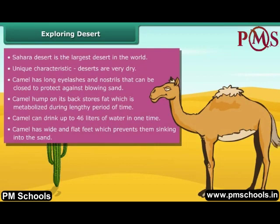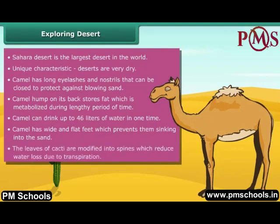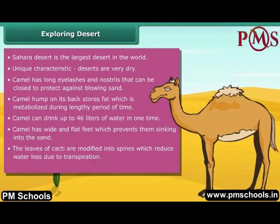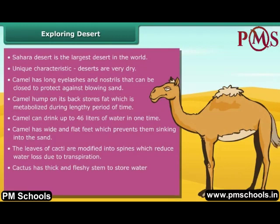Plants like cacti also show various adaptations to survive in a dry and hot environment. The leaves of cacti are modified into spines, which reduce water loss due to transpiration. Cactus has a thick and fleshy stem to store water. Roots of desert plants deeply penetrate the soil to absorb water.